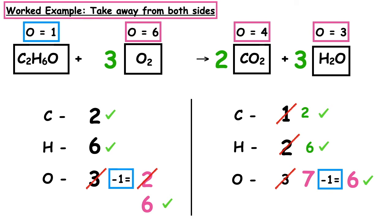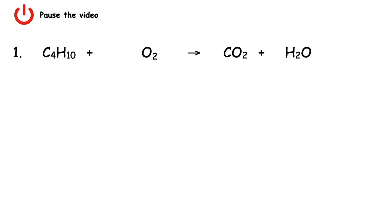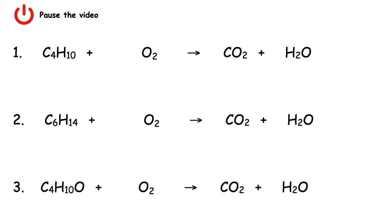Here are three examples of balancing equations for you to have a go at. Remember: if oxygen is only present in one reactant, multiply by a half; if oxygen is present in both reactants, do a takeaway on either side. Pause the video, have a go, then resume to check your answers.